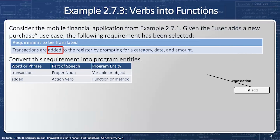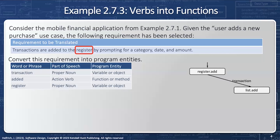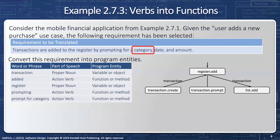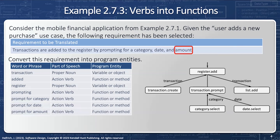Now I'm going to have a 'register.' A register is a proper noun, so it needs to be an object that does things like add. I also need to create a transaction that gets added to the register. 'Prompt' is an action verb — a function or method — so I'll say transaction.prompt. Since 'category' is part of 'prompt for a category,' that makes the whole thing a method: category.select. For date, I'll say date.select, and for amount, money.prompt. Each of these is a select or prompt from a category, date, or money type — all contributing to building my transaction.